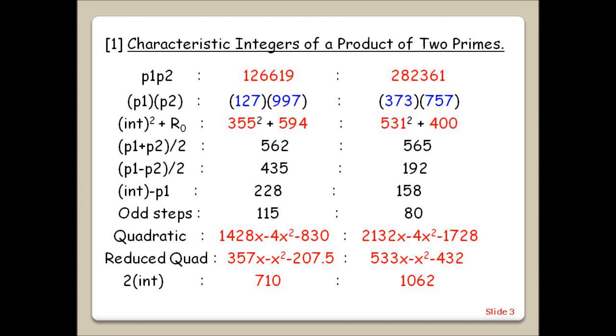This slide shows what I call the characteristic integers that result from factorizing the product of any two primes. The red integers are what we already know from the composite of the two primes. The blue integers are what we are trying to find, namely the two primes concerned. The black characteristic integers are the ones that arise as a direct consequence of the red and blue ones when we find the solution.